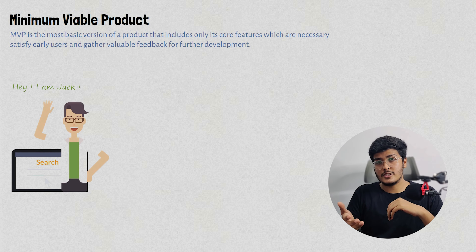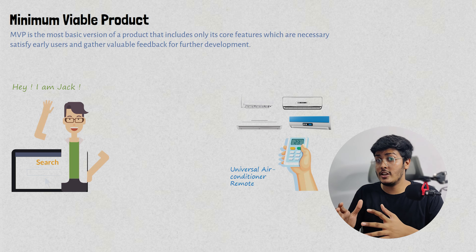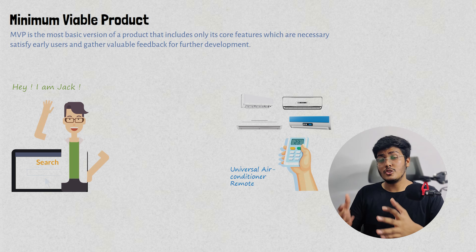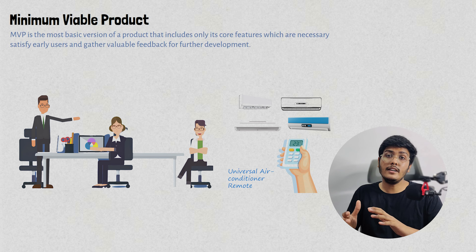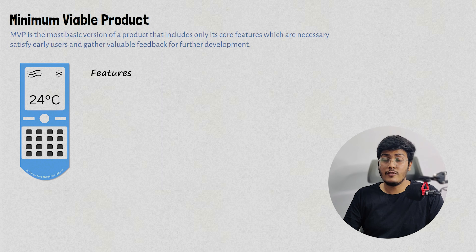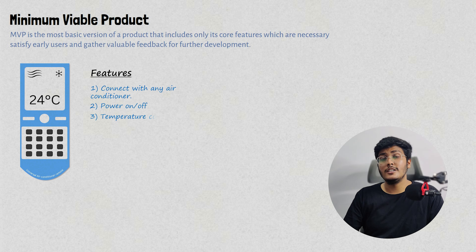For example, consider a person named Jack. Jack wants to build a universal air conditioner remote that can control any air conditioner. So Jack decided to do some market research and collaborated with his team to design the product. These were the features that were identified for the remote: first, connect with any air conditioner; second, power on and off; third, temperature control; fourth, fan speed; and so on.